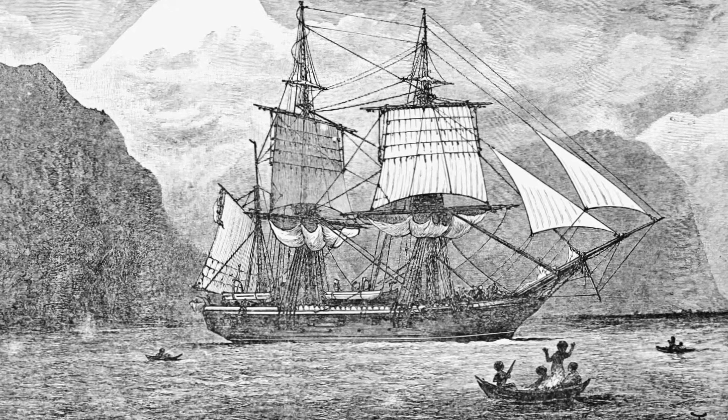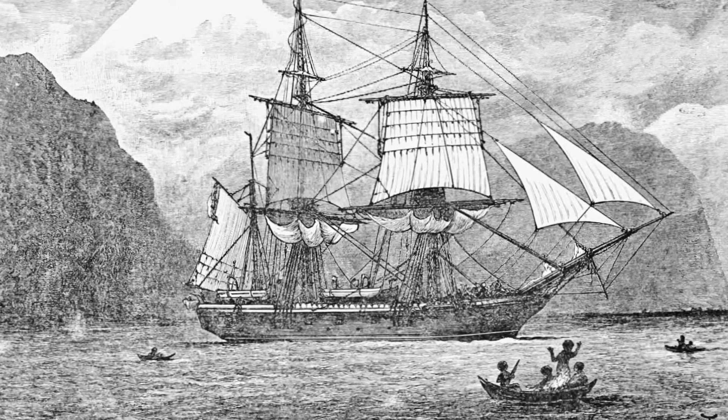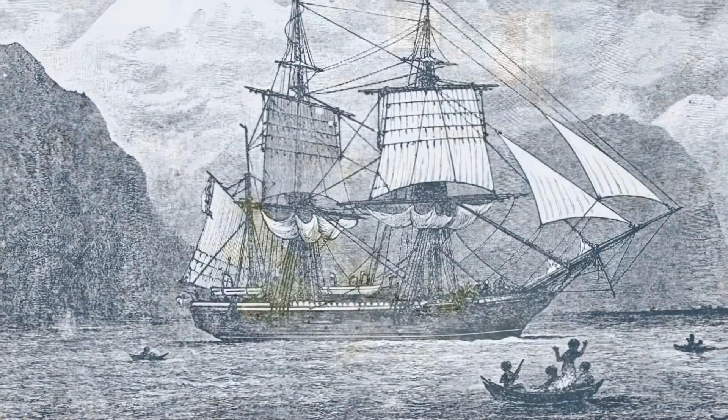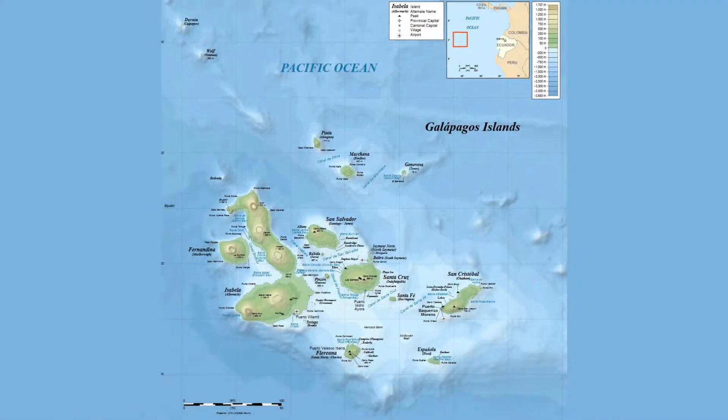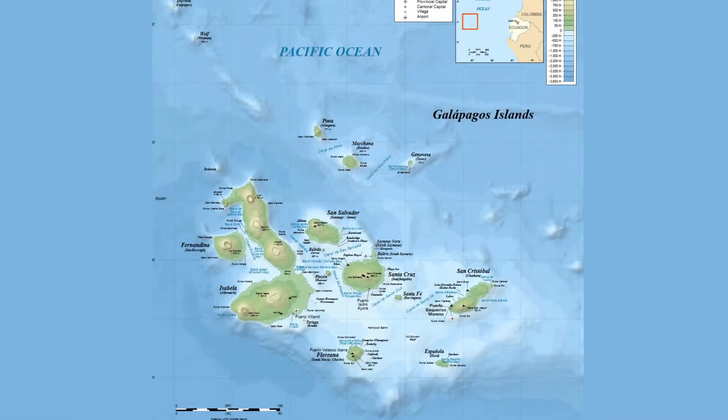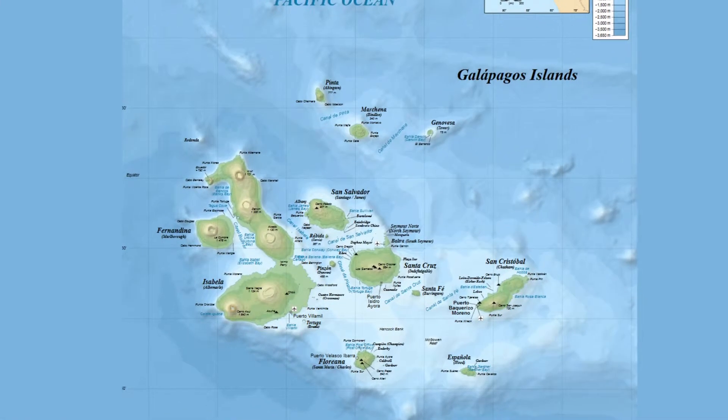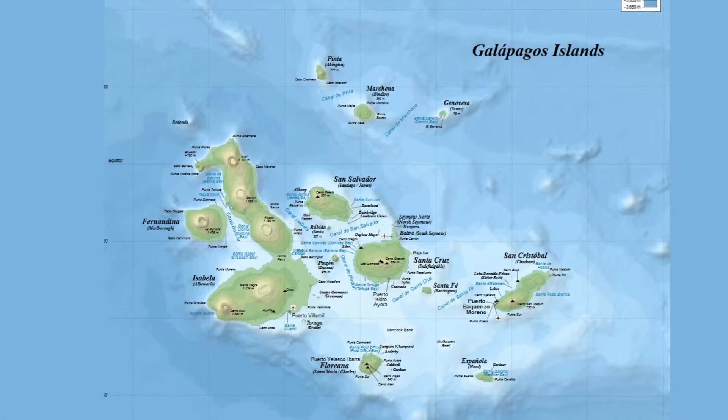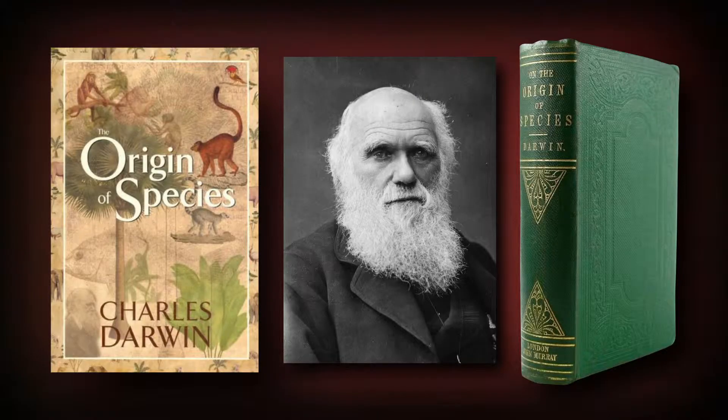He took his ship, the Beagle, to the Galapagos Islands which is about 600 miles off the west coast of South America, and there he thought he found something absolutely stunning which he wrote about in his book published in 1859, The Origin of Species.